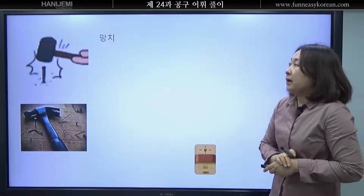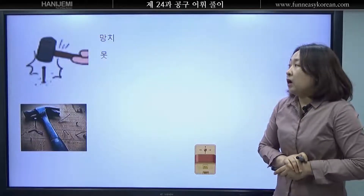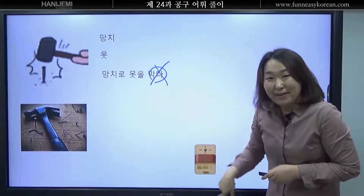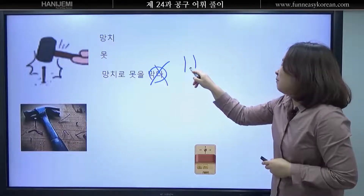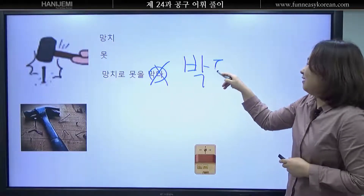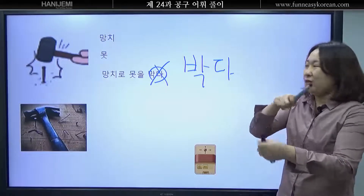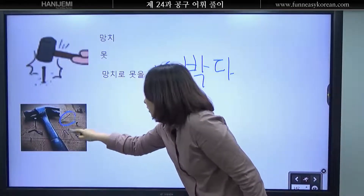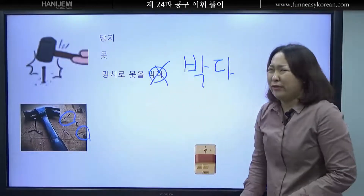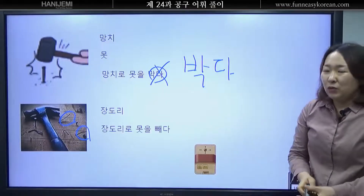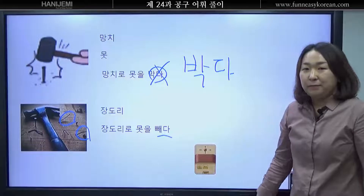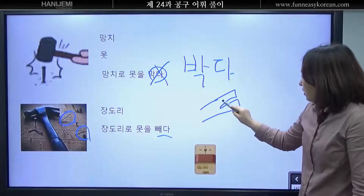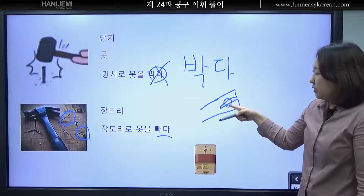자 여러분 이것은 무엇입니까? 자 망치입니다. 망치로 무엇을 합니까? 망치로 못을 박다라고 해야 합니다. 네 망치로 못을 박다. 박다. 자 그런데 보세요. 못 필요 없어요. 그러면 못을 빼야 합니다. 망치 뒤쪽을 이용해서 못을 빼야 합니다. 그것이 바로 장돌이입니다.